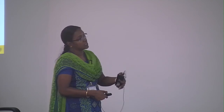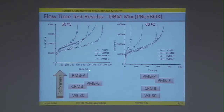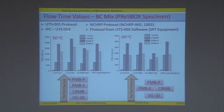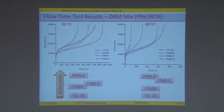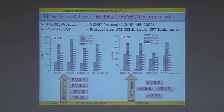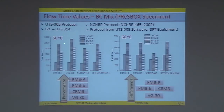Flow time or flow number is the point where the material starts shear deformation. Various protocols such as the UTS 005 protocol and IPC UTC protocol determine this by finding the minimum strain rate, which is defined as the flow time value. These protocols differ in how numerical differentiation and data smoothing are done. When trying to find the flow time value using different protocols, they give different values — while performance ranking remains consistent, the determination of flow time is a tricky issue because every protocol gives a different value.